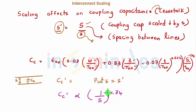This was the effect of interconnect scaling on the coupling capacitance. Reducing the spacing between two interconnects leads to increase in the coupling capacitance which might lead to problems during crosstalk which we have already seen.